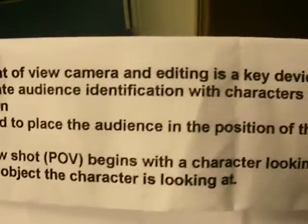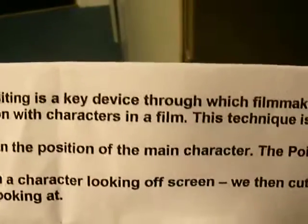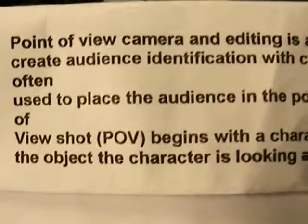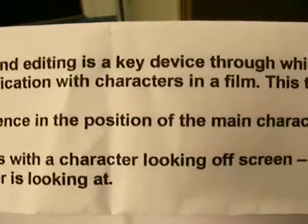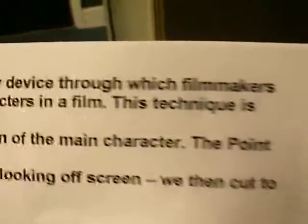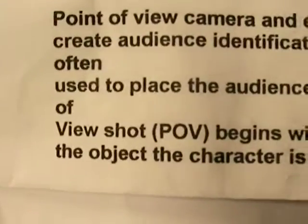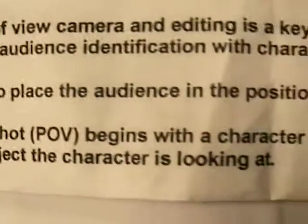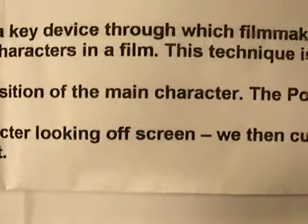Point of view camera editing is a key device through which filmmakers create audience identification with characters in a film. This technique is often used to place the audience in the position of the main character.